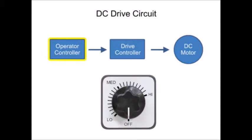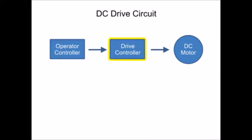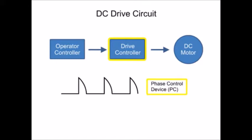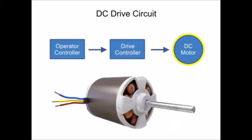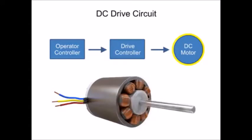One of the functions an operator controller provides is a method for altering the speed of the motor. The drive controller will regulate the input by means of either a phase control device or a pulse width modulator. And the DC motor can be an electrical device that needs to be adjusted to perform at various speeds.